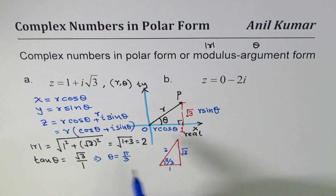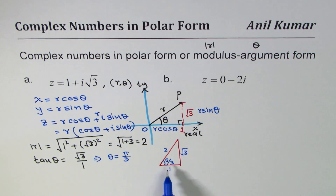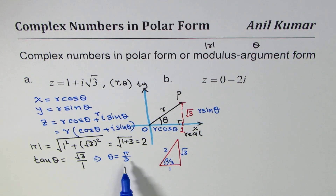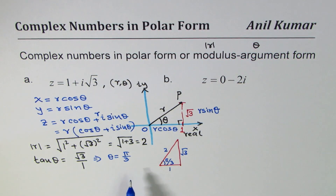Many students in grade 11 learning about polar forms may not have shifted from degrees to radians yet. They can use degrees; however, the standard is to use radians. By default we'll use radians, but students who haven't learned radians yet can use degrees — both are acceptable.